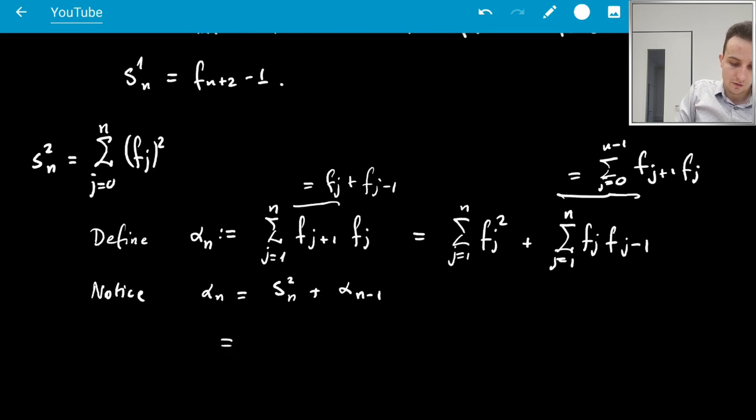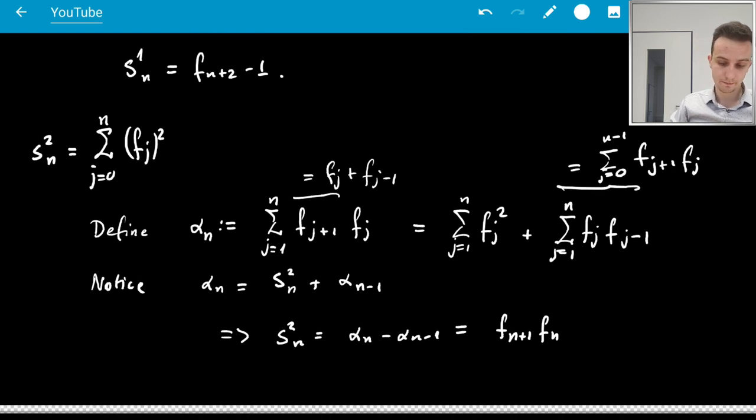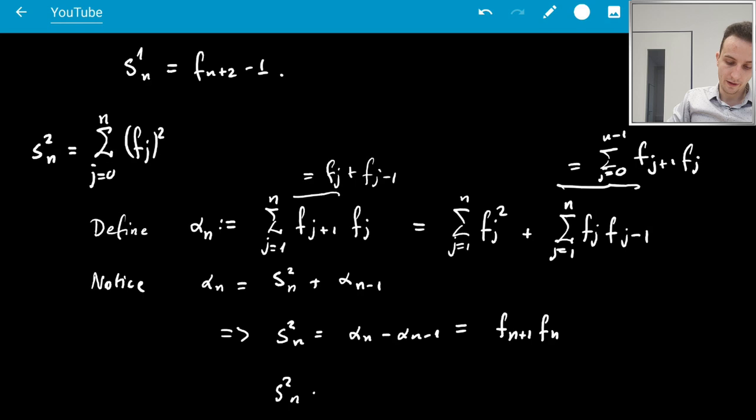So now from here, of course, S_2n is just the difference, alpha_n minus alpha_n-1. Whenever you get a difference, you're happy. So, we just compute the difference, it's what, if it's F_n+1 times F_n. This term looks even nicer. So, S_2n is F_n+1 times F_n. We have the first two sums.